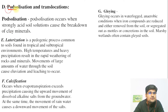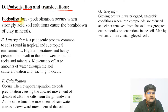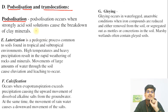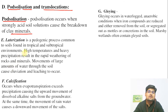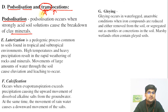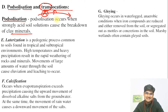The next process is podzolization and translocation. Podzolization occurs when strongly acidic solutions in the soil cause the breakdown of clay minerals — it is like acid breaking the various clay minerals. With podzolization there is also translocation, where materials are not located at a particular place but rather move from one place to another and get translocated in the process while breaking down.